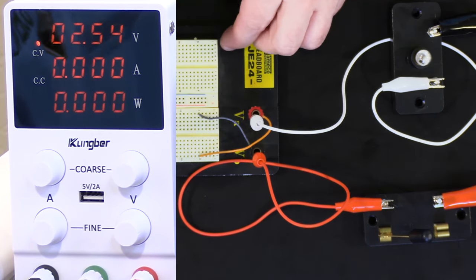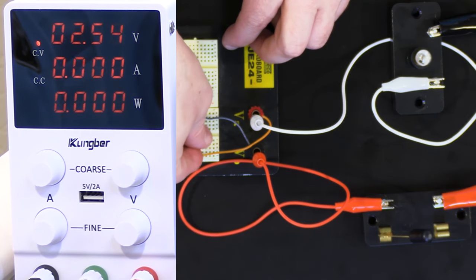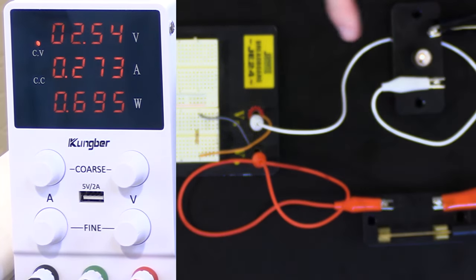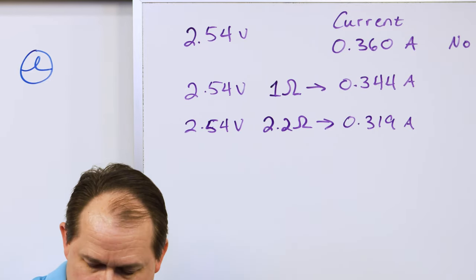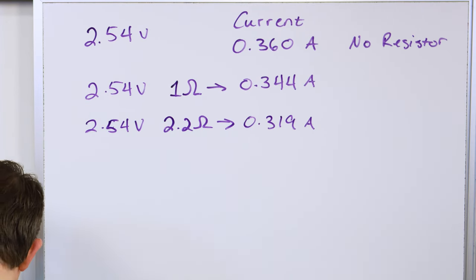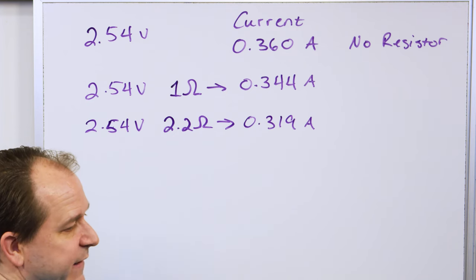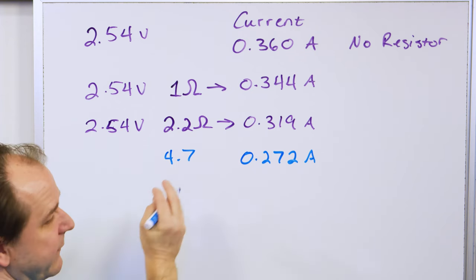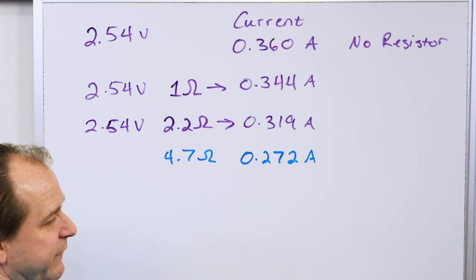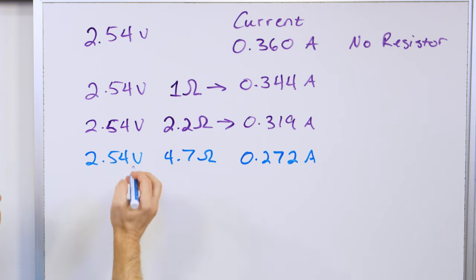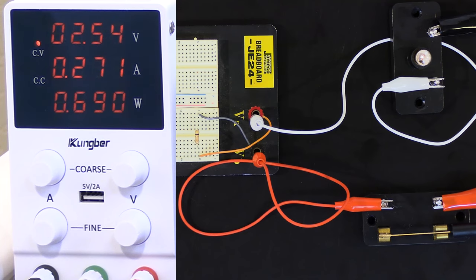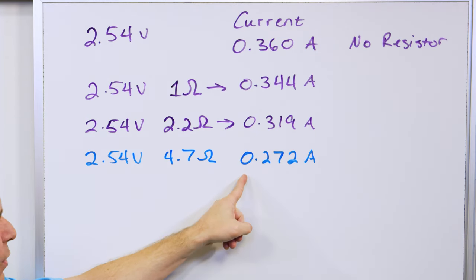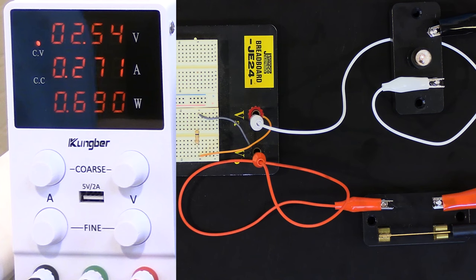Now we're going to put our last resistor in — this one is 4.7 ohms, double the value of the previous one. We should have about half the brightness. We close it up and we can see the light bulb is now very, very dim. The current we have in this situation is 0.272 amps, and the voltage is exactly the same 2.54 volts. As I increase the value of resistance, the current is going down, and because the current's going down, the brightness of the bulb is going down.